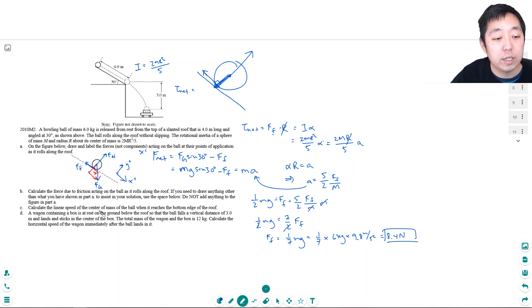Calculate the linear speed of the center of the master ball when it reaches the bottom edge of the roof. Well, if I know the acceleration, it's equal to 5 halves F over M. So, A is equal to 5 halves 8.4 divided by 6 kilograms. This is 3.5 meters per second squared.